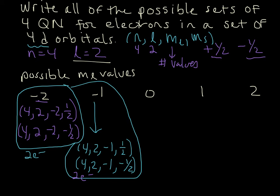So let's write for 0. So again, nothing changes, 4 and 2, 0. And then, because we're using m sub l equals 0, plus one half. 4, 2, 0, minus one half. So that's that one.